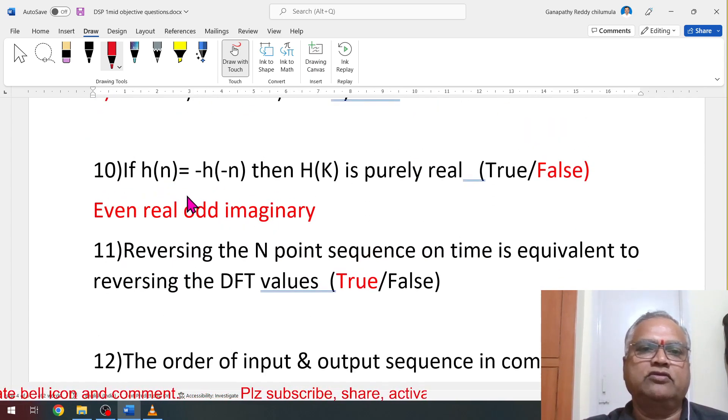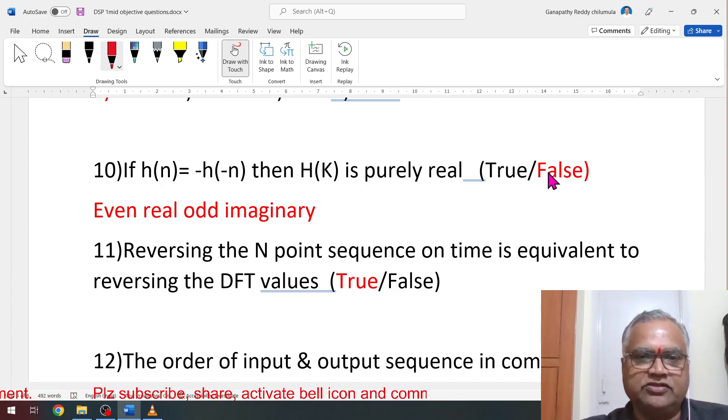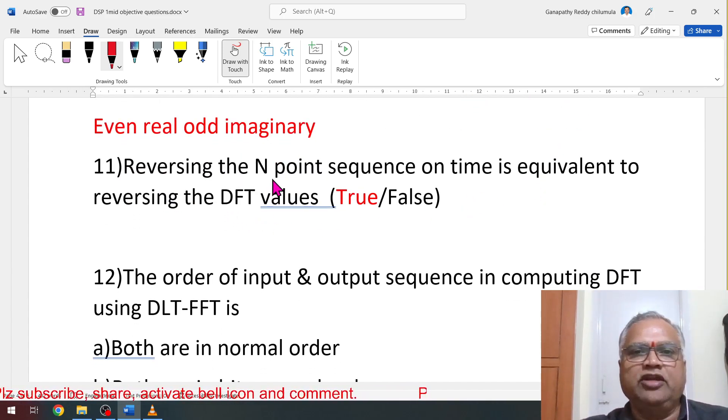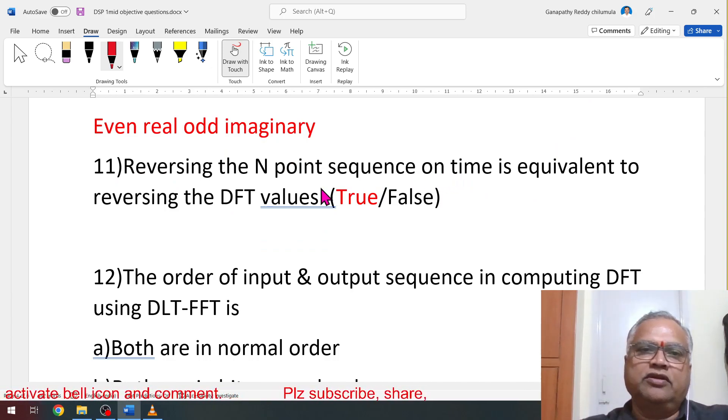If h(n) equal to minus h(−n), then H(k) is purely real. If the sequence is even, you get a real. Sequence is odd, it will be imaginary. But here it is odd, but answer given is real. Therefore, it is false. Reversing end-point sequence in time is equivalent to reversing the DFT values. If time sequence is reversed, DFT answers also reverse. Therefore, it is true.